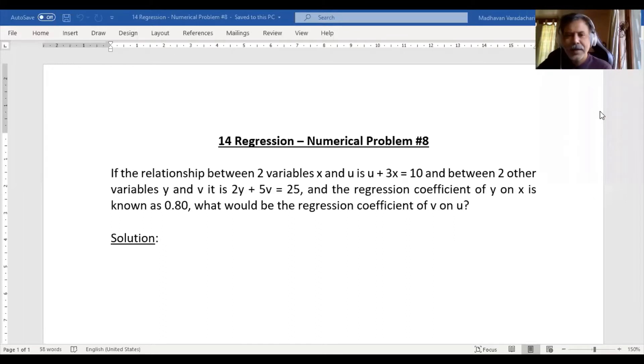Hello everyone, this is numerical problem 8 on regression. Here it is given if the relationship between two variables x and u is u plus 3x equal to 10, and between two other variables y and v it is 2y plus 5v equal to 25, and the regression coefficient of y on x is known as 0.8.